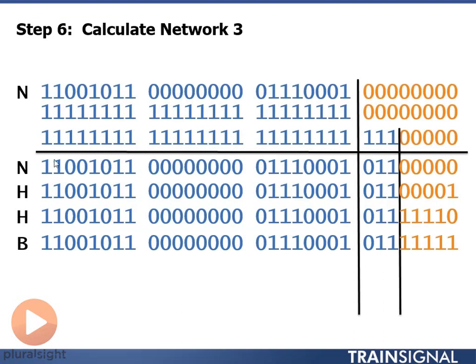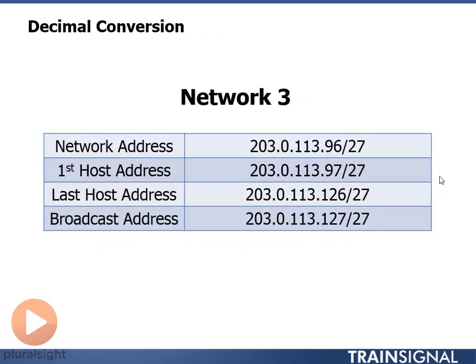But once again, if we look at the binary of that, here's network number 3 in binary again, there are definitely all 0's in the host portion here. So we know that 96 is a network address. This is a concept that's a little bit hard to get used to.